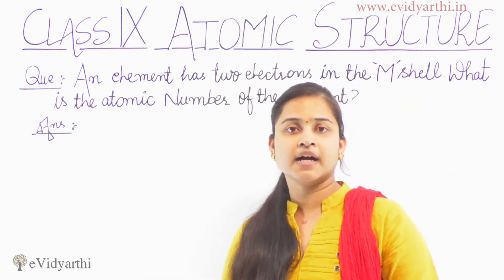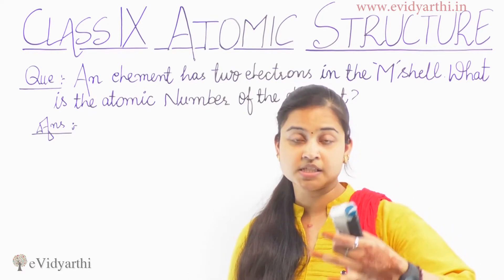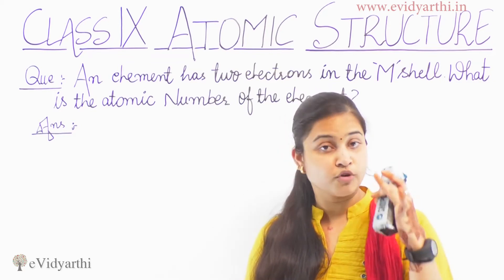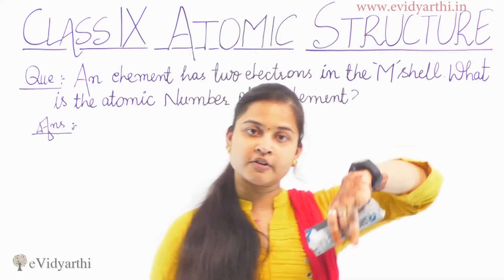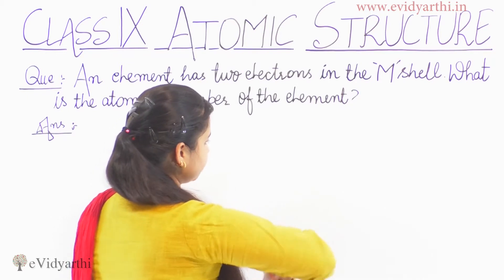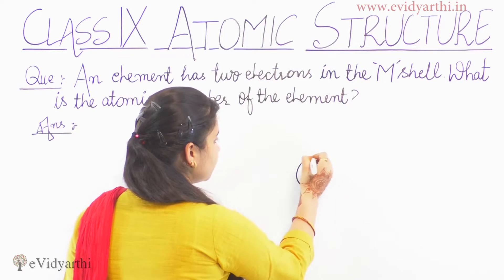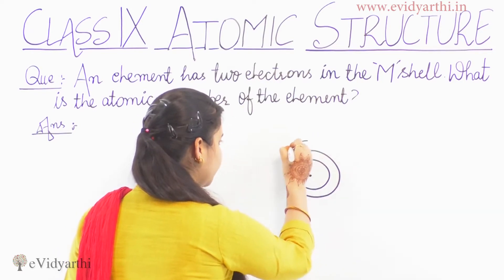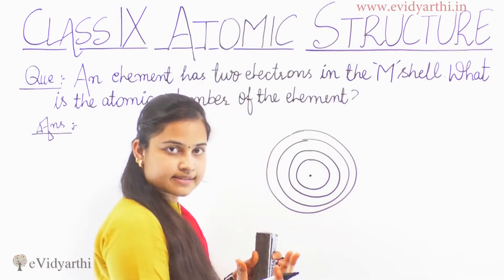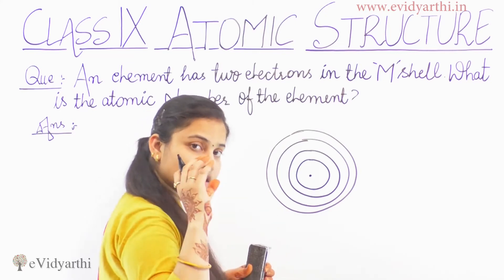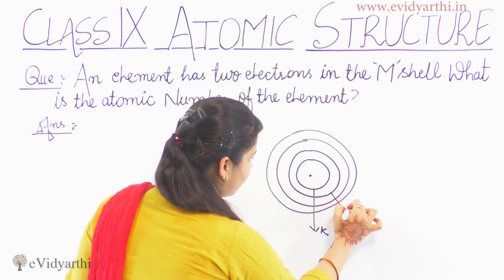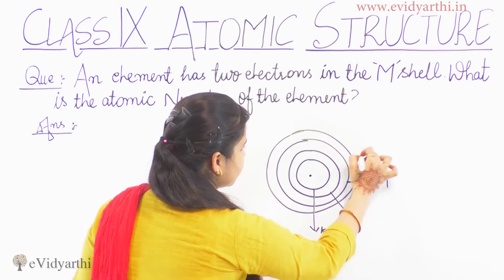First, I will tell you a little concept regarding the different energy levels which exist in an atom. Those energy levels we can call orbits. The nucleus is in the center and the electrons are circularly revolved around it. We can call these orbits shells — K-shell, L-shell, M-shell, N-shell.